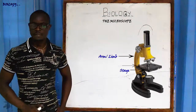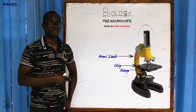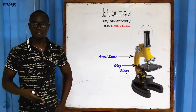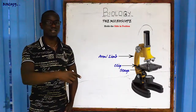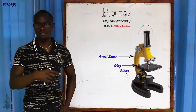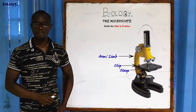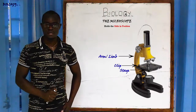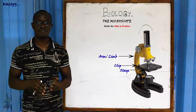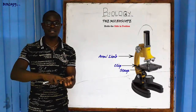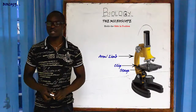On the stage we also have the clip. The function of the clip is to hold the slide firmly on the stage. After placing your slide on the stage, it is not stable — it can slide around. So we use the clip to hold the slide in position on the stage.